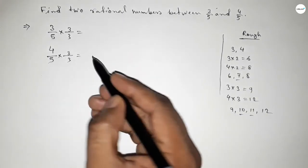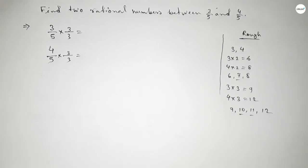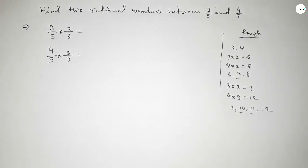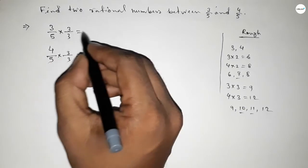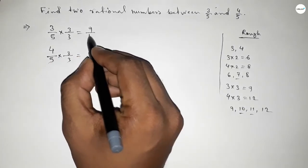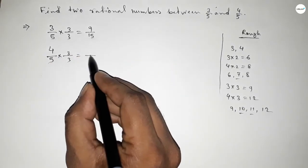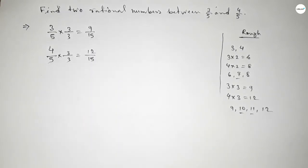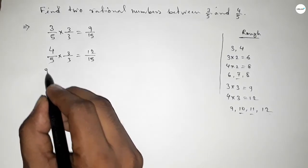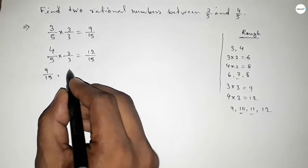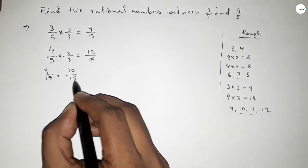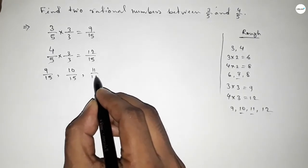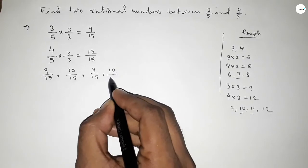So 3/5 becomes 9/15 and 4/5 becomes 12/15. Between 9 and 12, we got two natural numbers. All the rational numbers are 9/15, 10/15, 11/15, and 12/15.